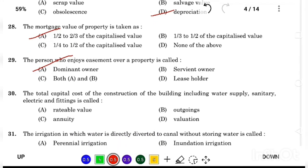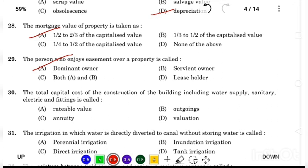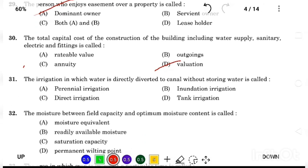The total capital cost of the construction of the building, including water supply, sanitary, electric and fitting is called Answer Option D, valuation. The irrigation in which water is directly diverted to canal without storing water is called Answer Option C, direct irrigation.